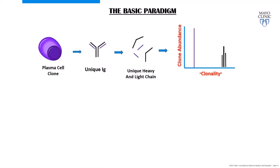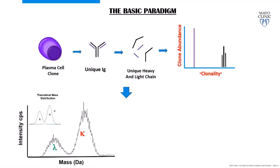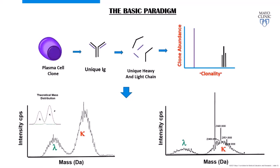If you run normal human serum on high-resolution mass spectrometry you get two humps, because kappa and lambda light chains have different masses due to different constant regions. In a patient overproducing an immunoglobulin, you can see a sharp peak against the polyclonal background — which could be an M protein or an immune response. Be aware that some peaks may represent PTMs of the primary clone, not a unique clone.